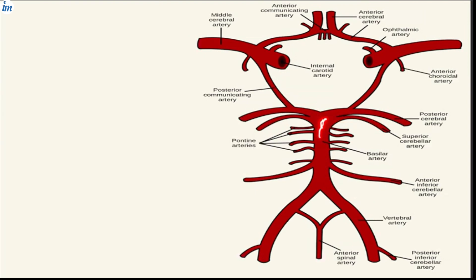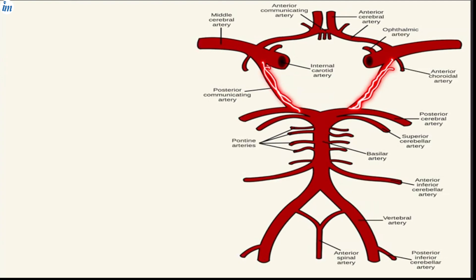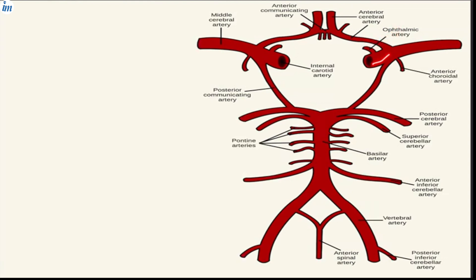The basilar artery also gives the superior cerebellar artery on both sides and the posterior cerebral artery — this constitutes the posterior vertebrobasilar supply. For the anterior supply, the internal carotid artery gives the posterior communicating artery, which anastomoses with the posterior cerebral artery from the basilar artery. The internal carotid also gives the ophthalmic artery, anterior choroidal artery, and anterior cerebral artery, which anastomoses via the anterior communicating artery.